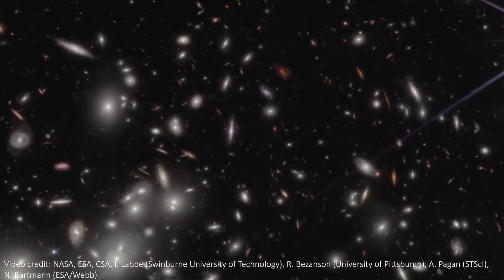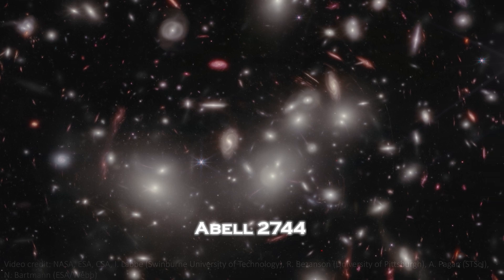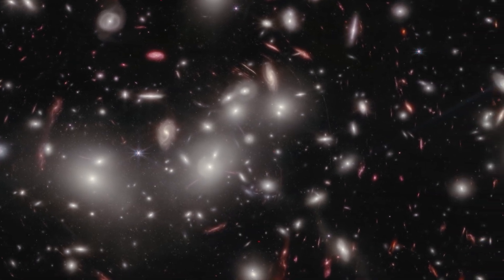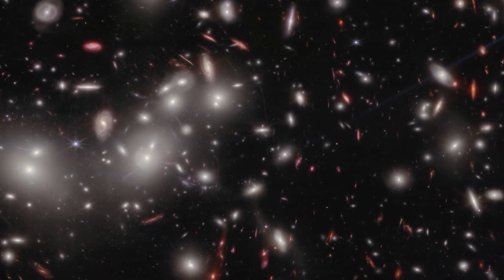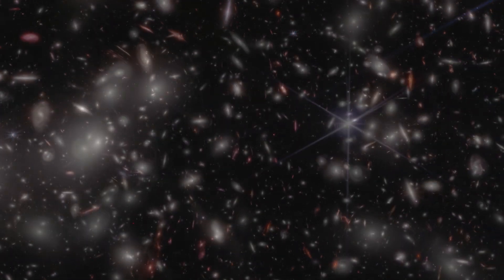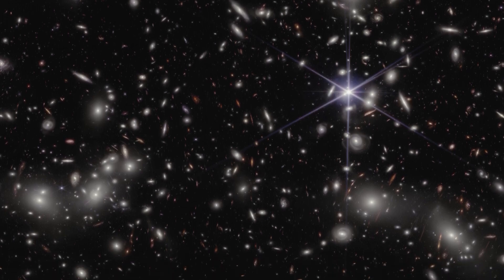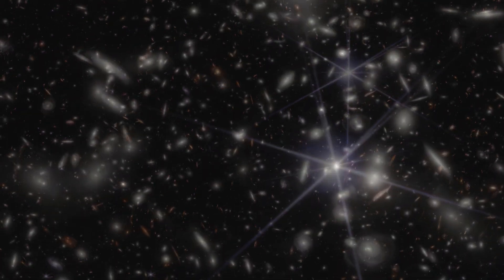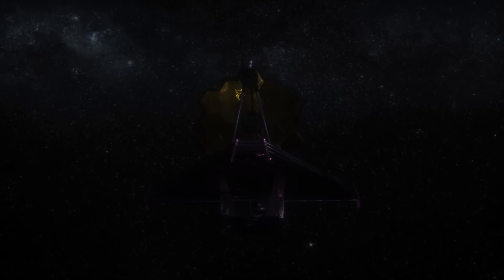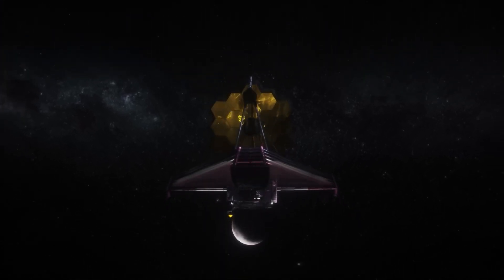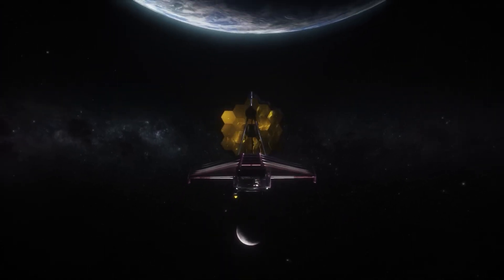Webb captured a stunning panoramic view of Abell 2744, showcasing around 50,000 sources of infrared light. These include galaxies previously hidden from view, now brought to life by the telescope's unparalleled capabilities.